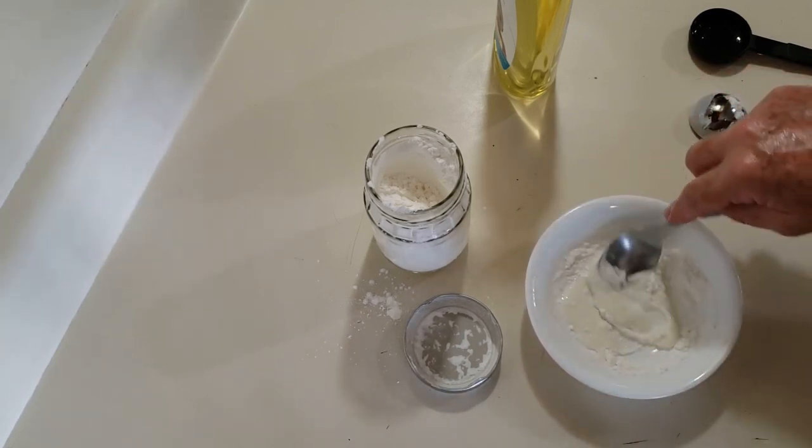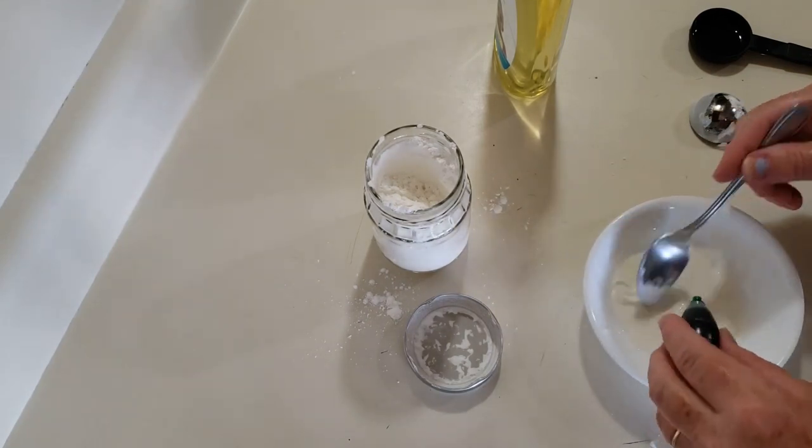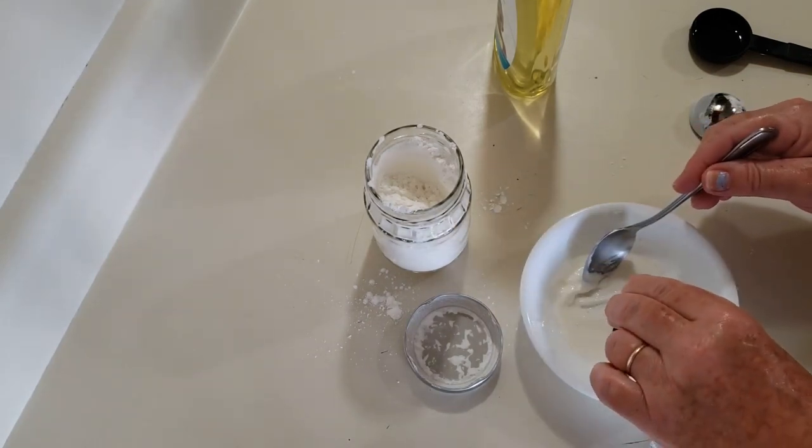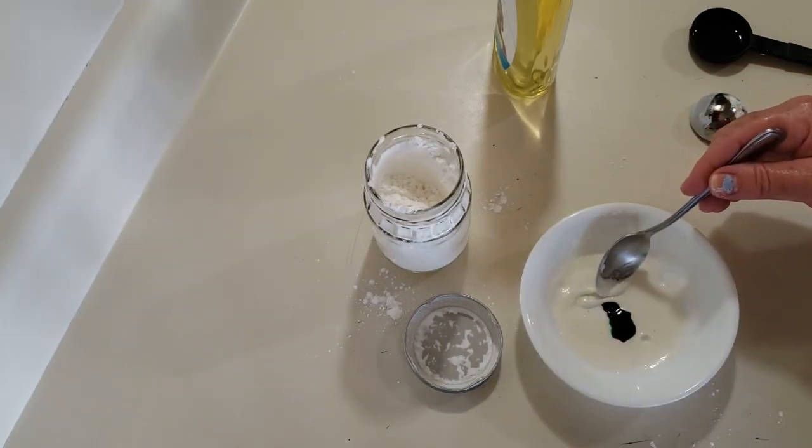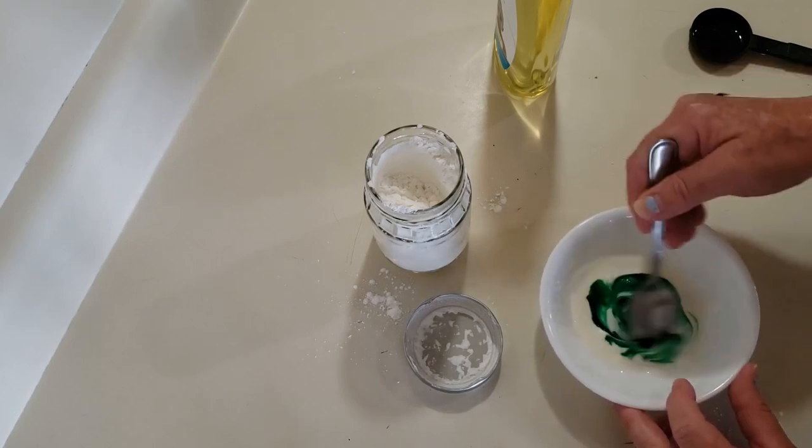And then we're going to add some food coloring. So I'm going to do some green. And you can start off with a couple drops, but you can put in several and get it as dark as you want.